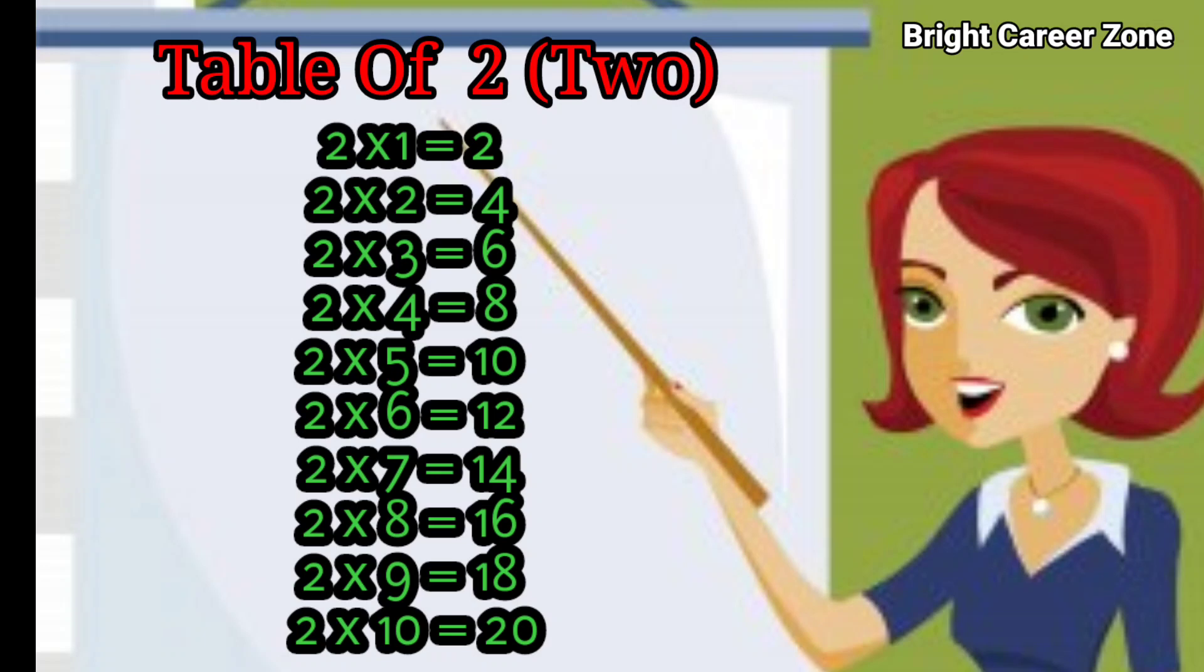2 1's are 2, 2 2's are 4, 2 3's are 6, 2 4's are 8, 2 5's are 10, 2 6's are 12, 2 7's are 14, 2 8's are 16, 2 9's are 18, 2 10's are 20.